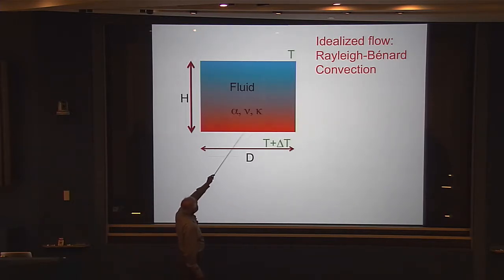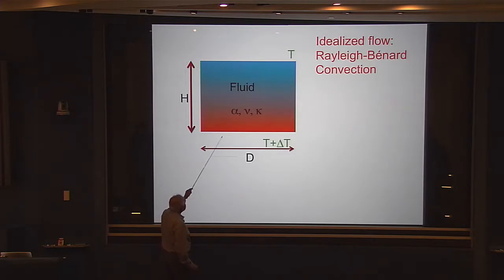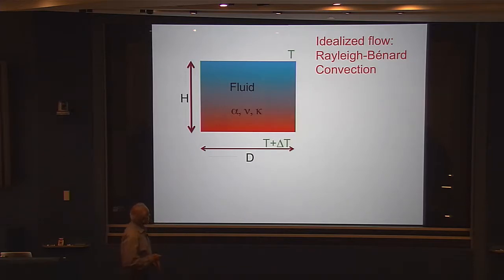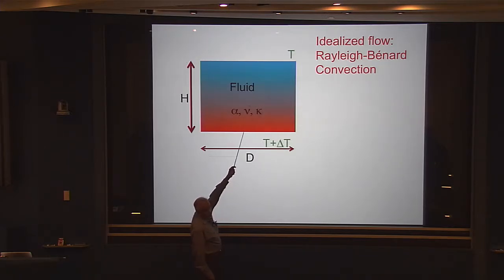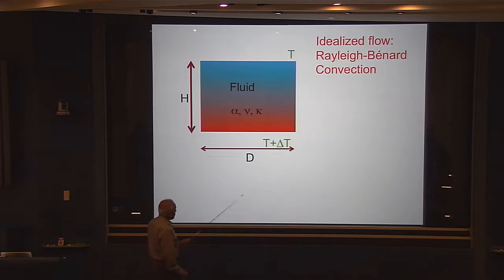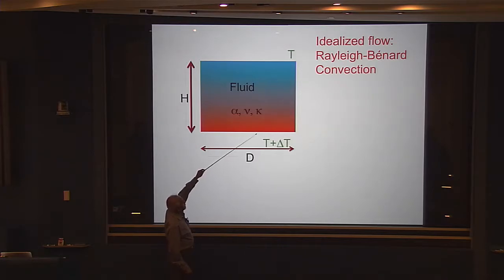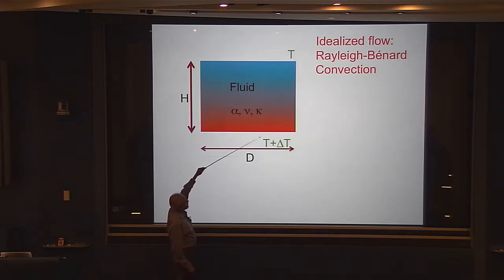Here is a box in which a fluid of known properties is sitting. The bottom and top walls are thermally conducting and the side walls are not. It has a height h and diameter d. You maintain the bottom plate at a temperature delta T larger than the top plate. If delta T is small, the transport of heat takes place by molecular conduction and the temperature profile will be just linear.